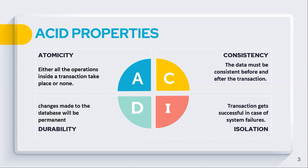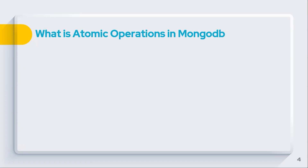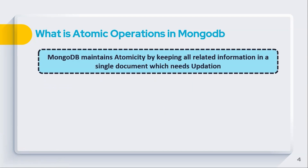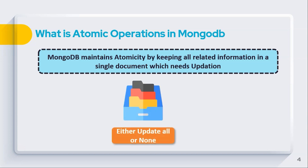Coming to MongoDB — what are atomic operations in MongoDB and how can we achieve them? MongoDB does not support transactions across a database in the same way. In the application design, we do not ask MongoDB to ensure data integrity at the multi-document level. However, MongoDB provides many atomic operations such as saving a document, modify, update, and delete. MongoDB maintains atomicity by keeping all related information in a single document. If there is an error, it should either update all documents or not update anything at all.